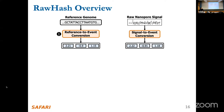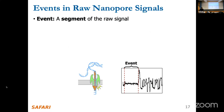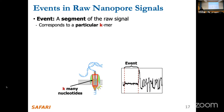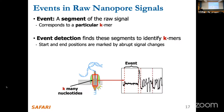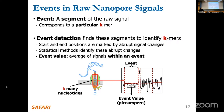The first step is converting the reference genome and signal to event values. An event is essentially a segment of the raw signal corresponding to a particular k-mer — a subsequence of length k. Event detection mechanisms find these segments. The start and end positions are marked by abrupt changes in the signal, corresponding to the sequencing of a new base in the nanopore. Statistical methods are used to identify these abrupt changes. After identifying these segmentation points, we take the average of the signals within each segment, yielding an event value that corresponds to a particular k-mer.